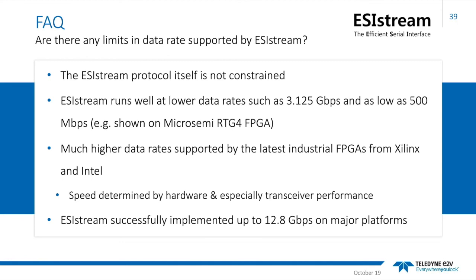What FPGAs are supported by EasyStream? EasyStream can be implemented on any FPGA that has available high-speed transceivers — that includes the GTH and GTX from Xilinx, the GT and GX from Intel, and the CERDIs transceivers available from MicroSemi. The transceiver specification determines the data rates that can be achieved in all cases, so the limiting factor is always down to the capability of the transceiver circuits. Are there any limits in data rate that EasyStream supports? The EasyStream protocol itself is not constrained data rate wise. We demonstrated EasyStream can run at lower data rates such as 3.8 gigabits per second and below, even down to 500 megabits per second. Much higher data rates are supported by the latest industrial grade FPGAs from Xilinx and Intel, and we've shown EasyStream successfully implemented at data rates up to 12.8 gigabits per second on major FPGA platforms.